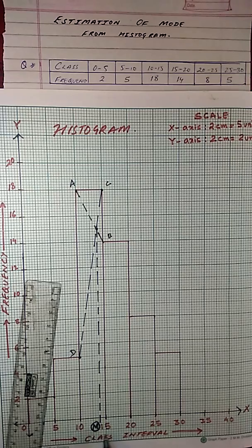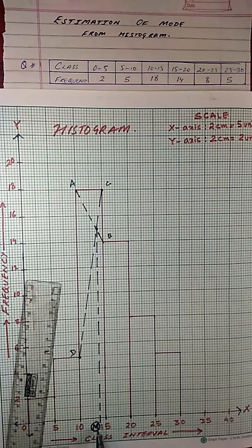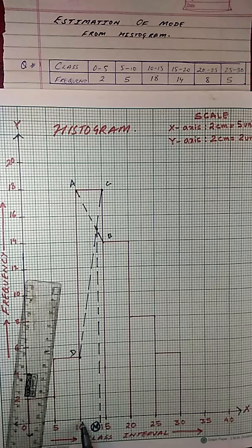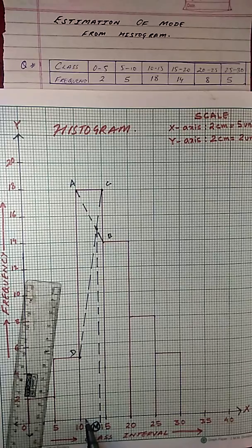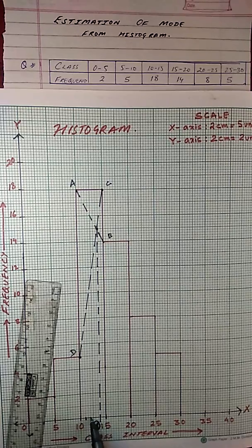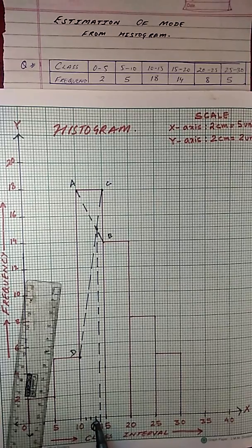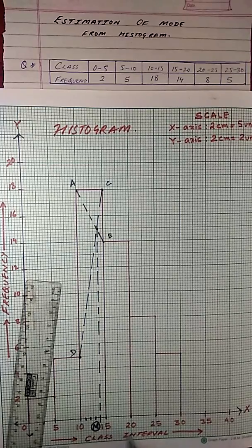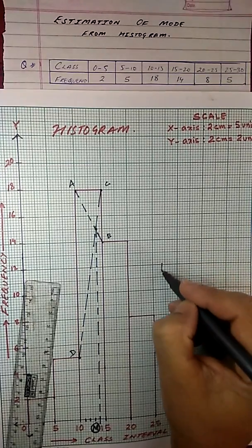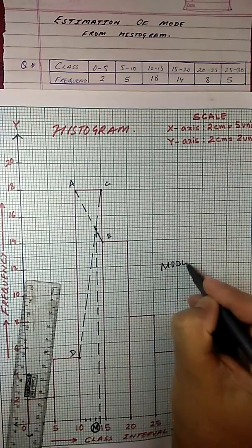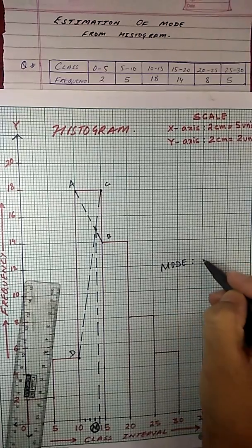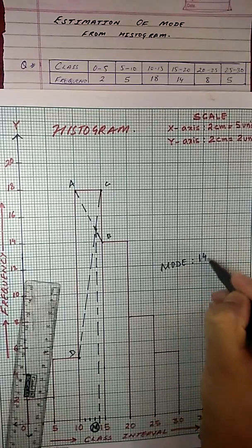The modal class is 10 to 15 and the modal value is, now let me see, this is 10. So here 5 divisions means 2 divisions equals to 1. So this is 11, this is 12, this is 13. So this point will be 14. So the mode, the estimated mode of this data is 14.